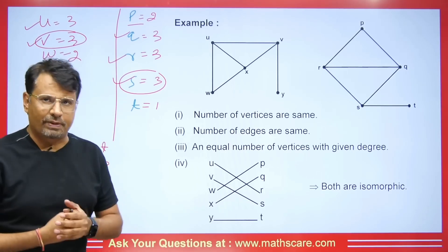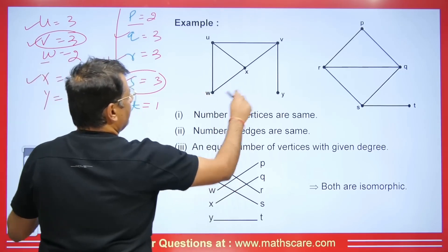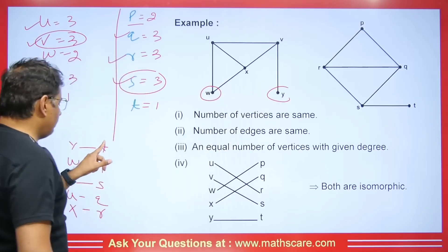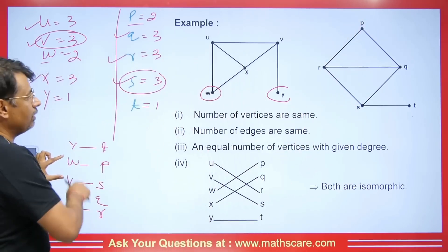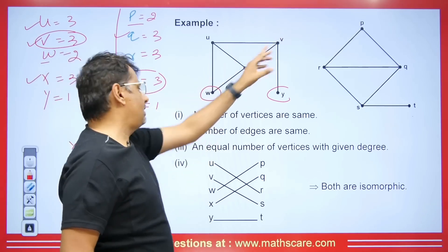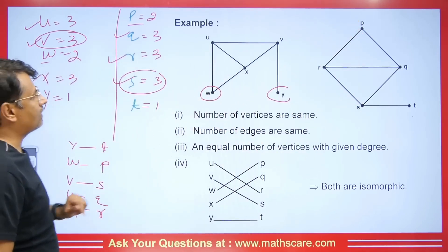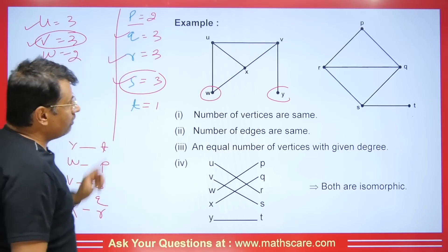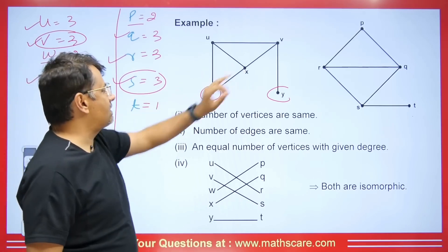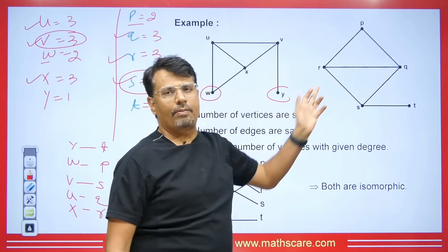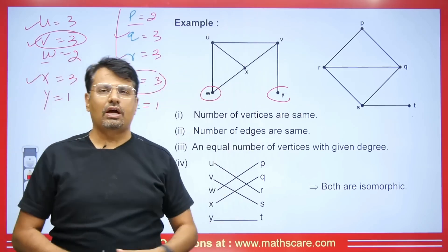Now let's verify one-to-one correspondence of edges. Y and W have no edge between them, and T and P also have no edge — this checks out. W and V have no edge, and P and S also have no edge — fine. V and U have an edge, and S and Q should also have an edge — yes, they do. U and X have an edge, so Q and R should also have an edge — they do. Even if you interchange the correspondence, edges still match. Therefore, both graphs are isomorphic.